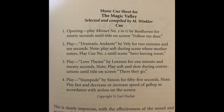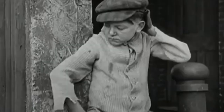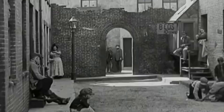Here is the cue sheet for an imaginary film that Winkler drew up the night he got the idea. Music cue sheet for Magic Valley, selected and compiled by M. Winkler. Cue 1 — Opening: Play Minuet No. 2 in G by Beethoven for 90 seconds until title on screen, 'Follow me, dear.' Cue 2: Play Dramatic Andante by Veli for 2 minutes and 10 seconds. Note: play soft during the scene where mother enters; play cue No. 2 until scene — hero leaving room. Cue 3: Play Love Theme by Lorenz for 1 minute and 20 seconds. Note: play soft and slow under conversations until title on screen. Cue 4: Play Stampede by Simon for 55 seconds. Note: play fast and decrease or increase speed of gallop in accordance with action on the screen. This is clearly imprecise, with the effectiveness of the mood and the accuracy of timings dependent on the pianist or conductor's ability to interpret these instructions. However, the response from producers and musicians was overwhelmingly positive — it gave them a musical script to follow that ostensibly followed the wishes of the filmmakers.